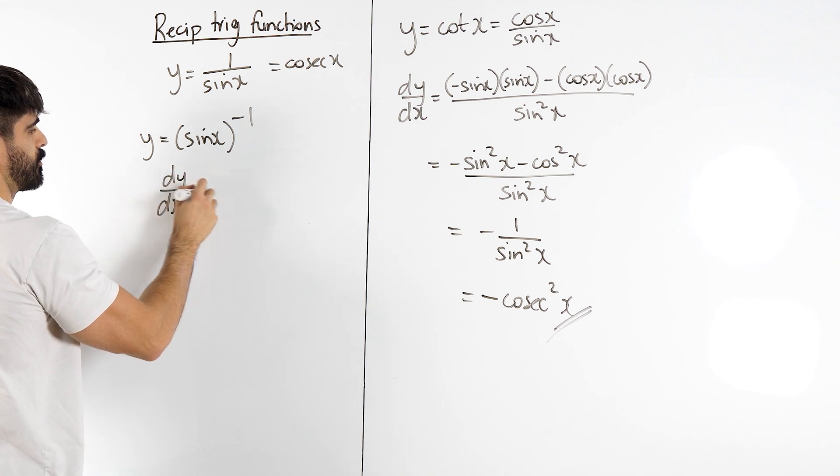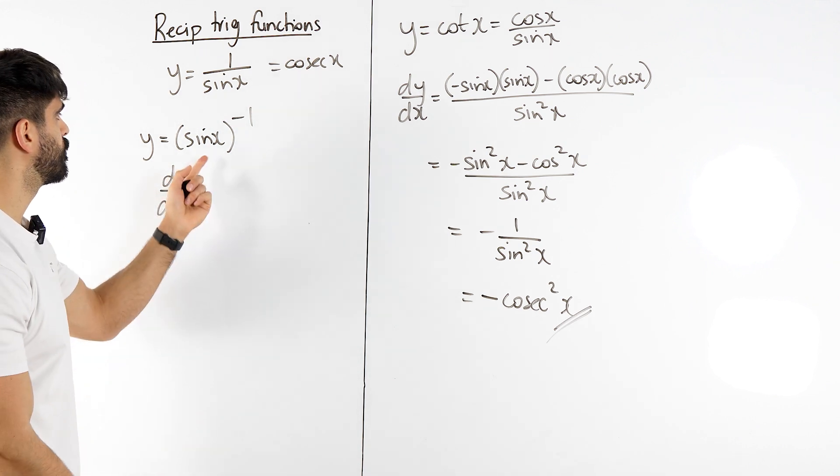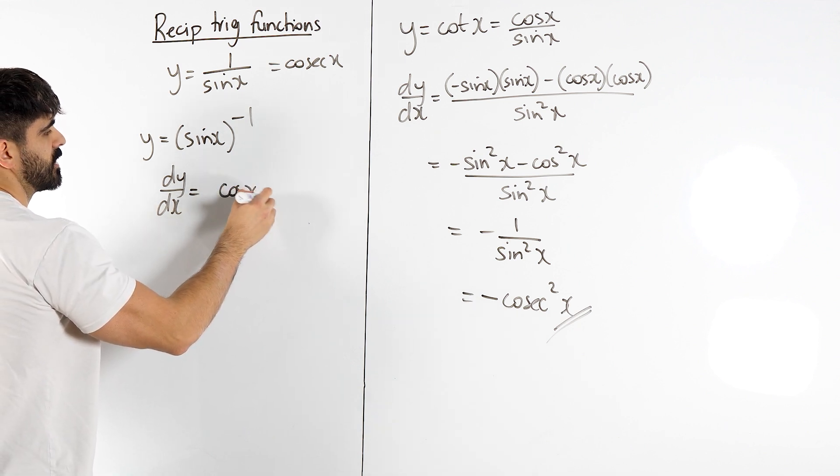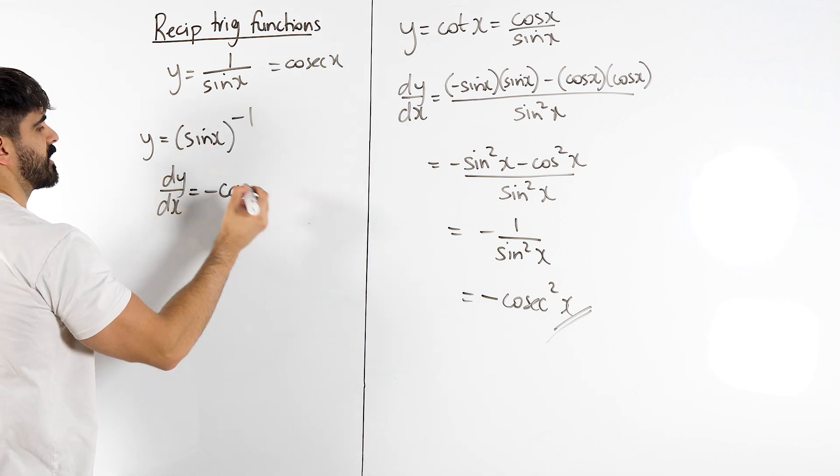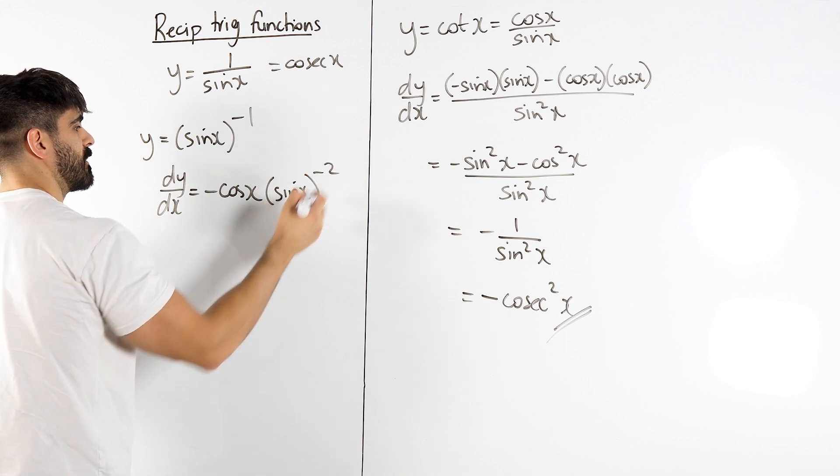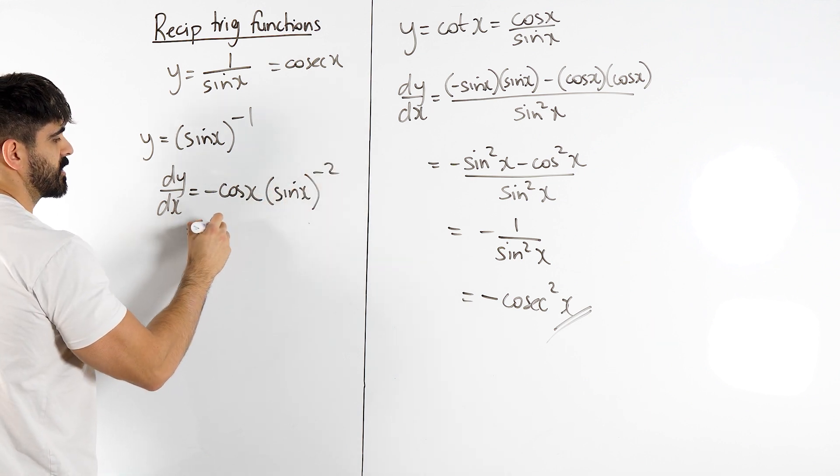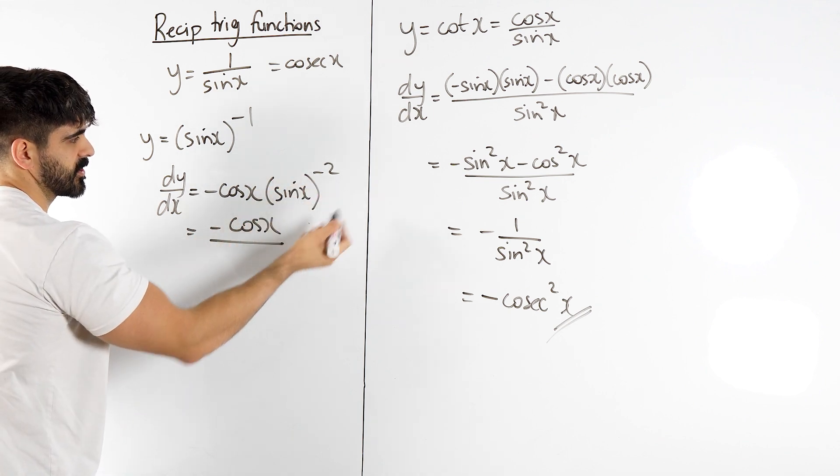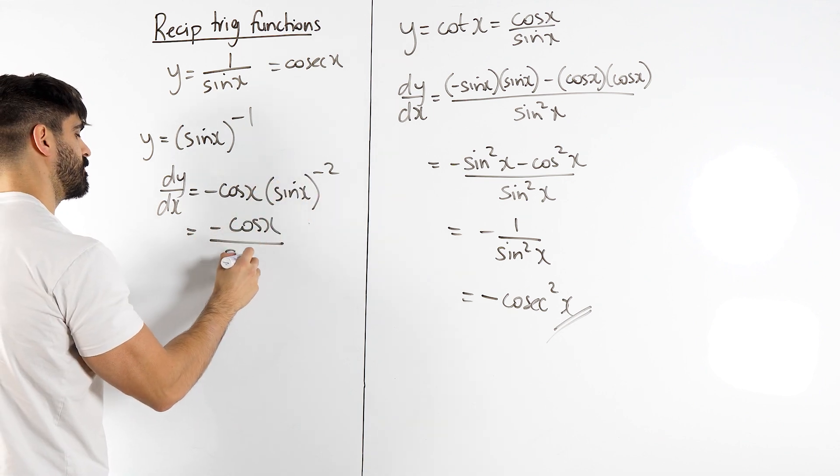Now if you've been watching my previous videos, you should be well conditioned how to differentiate this. We differentiate what's inside the bracket first. Sin differentiates to cos, then it's a power function, so we bring down the minus and knock one off the power, so it becomes minus two. We can't leave it like this, we get minus cos x over sin squared x.